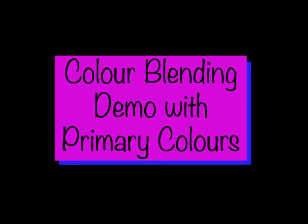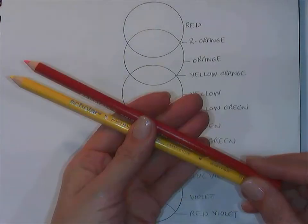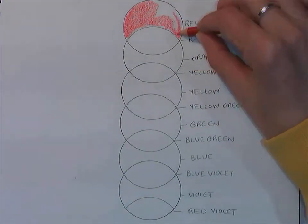Hi everyone, this is your color blending demo with primary colors. I just made the color wheel with a grouping of circles. You can see they're all listed there.